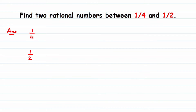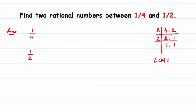We do this by taking the LCM. So LCM of 4 and 2: we take 2 — two 2's are 4, and two 1's are 2, then 1 remains. So we multiply these: LCM is 4. The first number is 1/4.